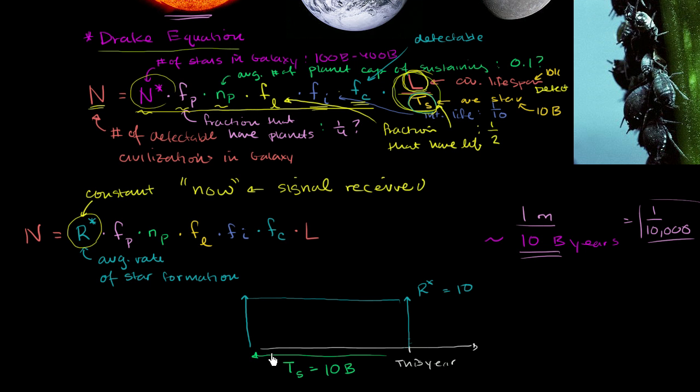Now, how many total stars would there be in our galaxy? Well, any star that came about, so we could go beyond that. We could go to stars that were born more than 10 billion years ago, more than this T sub s years ago. So you could have a star that was born 10 billion and one years ago on average. We're talking about on average here. On average, that star will not exist anymore. So that star is not in existence. The stars that are in existence, once again, on average, are the ones that were born 10 billion years ago all the way to the ones that were born this year. So you have 10 billion years of star birth, the ones that are still around. Each year, there's 10 of those years.